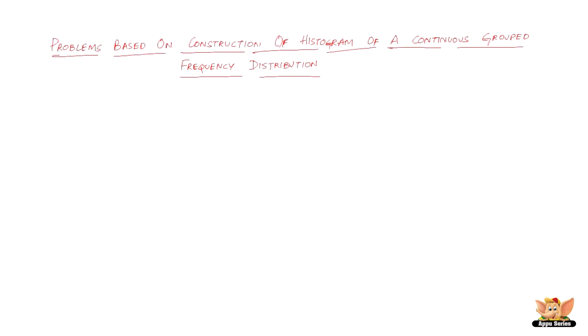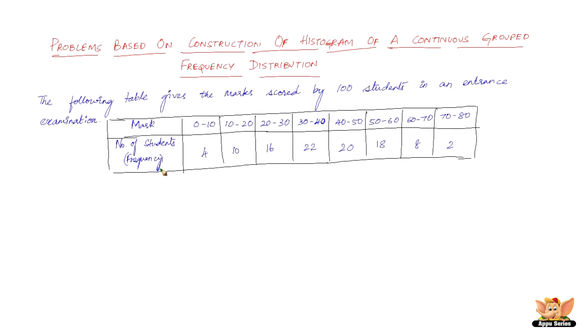In this video, let us solve problems based on construction of histogram of a continuous grouped frequency distribution. So here is a question. The following table gives the marks scored by 100 students in an entrance examination. The marks and the number of students, that is the frequency, are given here.